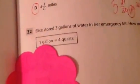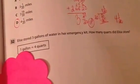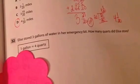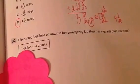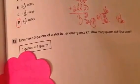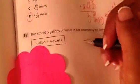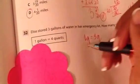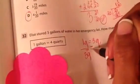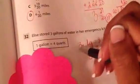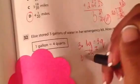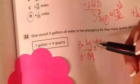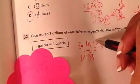Let's look at this one. Even though there's a problem we haven't done before, we should be able to figure it out. Elise stores 3 gallons of water in her emergency kit. How many quarts did Elise store? 1 gallon equals 4 quarts. Me not being careful.